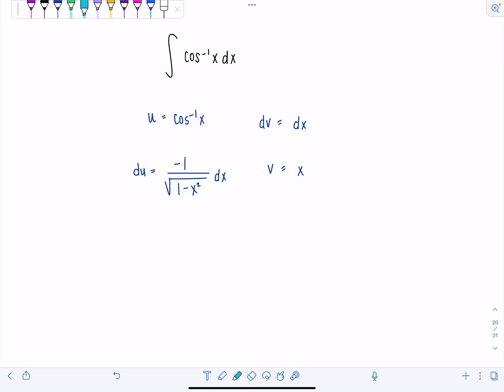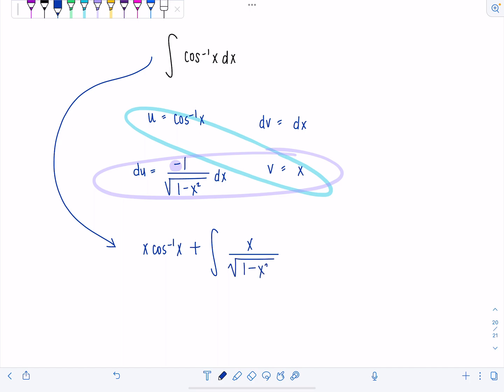And then I always set it up the same way, uv, so I just think that diagonal product that does not get integrated. Hooray, because we don't know how to integrate cosine inverse of x. x minus vdu, but check this out, I already got another minus sign, so that's going to change that to plus, x over square root of 1 minus x squared dx. Lovely.